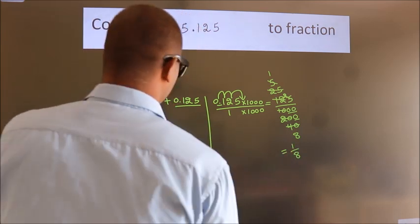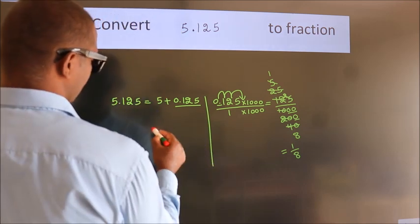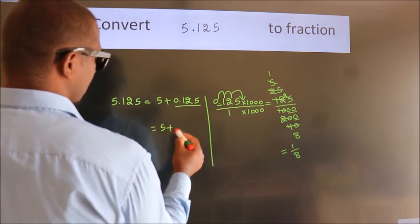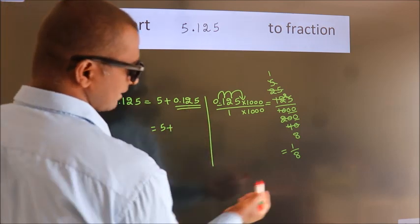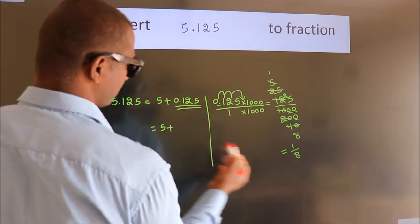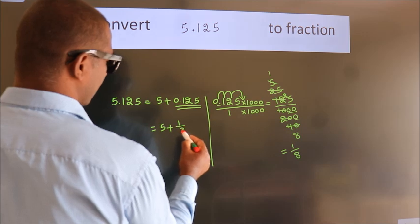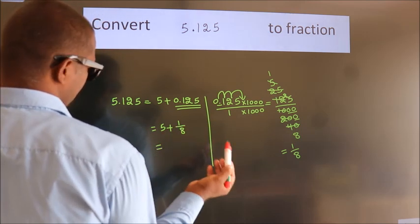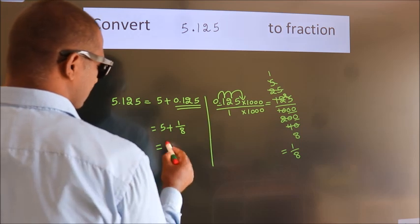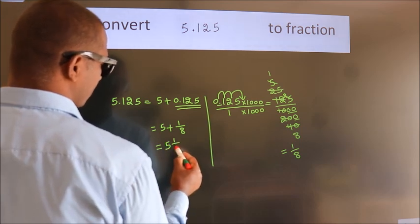Now here, 5 plus in place of 0.125, now we write this fraction 1 by 8. 5 plus 1 by 8, in mixed fraction it is 5 1 over 8.